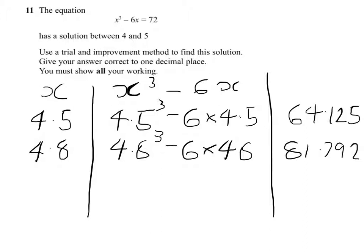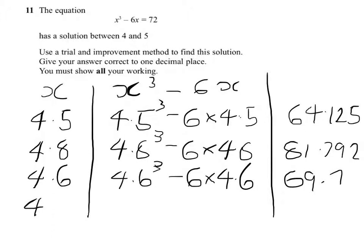So we'll try 4.6 now. You'll see me repeat the pattern. This is much closer, giving us 69.7, so we'll try 4.7.